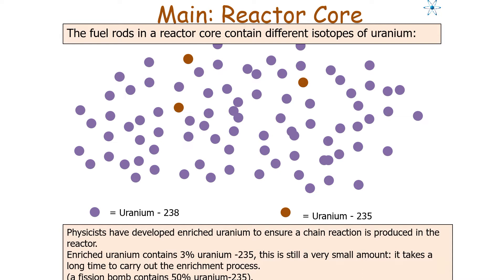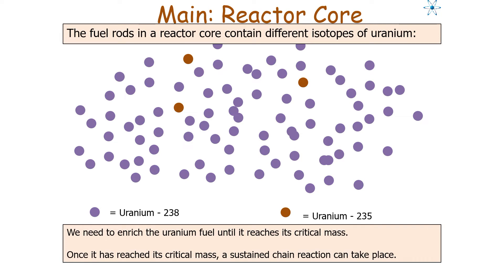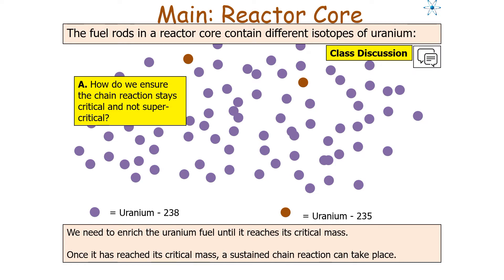The enrichment process takes a long time to carry out. Interestingly, a fission bomb contains about 50% uranium-235. Many countries wish to develop the ability to produce enriched uranium; however, developed countries do not like to share how this is produced, as enriched uranium tends to be produced at secure locations. When doing the fission process, we need to enrich uranium fuel until it reaches its critical mass, because once it reaches critical mass, a sustained chain reaction can take place. The key question is how we ensure the chain reaction stays critical and doesn't go supercritical.